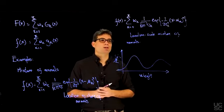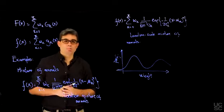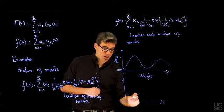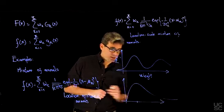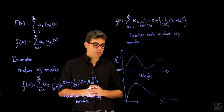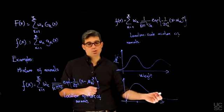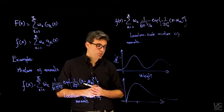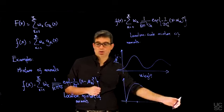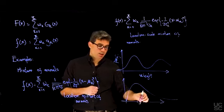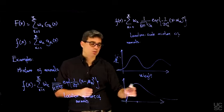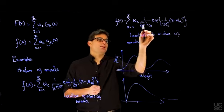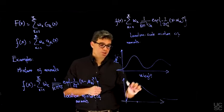Another use case for mixtures of normals is capturing skewness. Some distributions have a heavy fat tail in one direction — examples include country population, income, or land size, all of which tend to be highly skewed. You have a few individuals or countries with large values and the majority clustered at lower values. A mixture of normals where the means are different but not too different and variances are relatively large can produce shapes that capture this skewness.